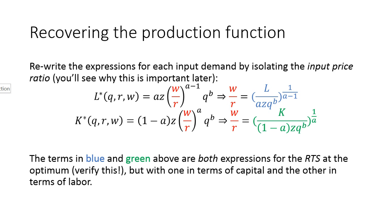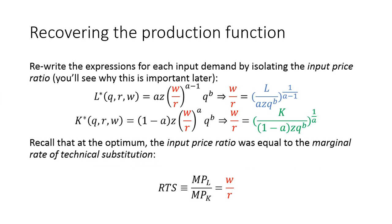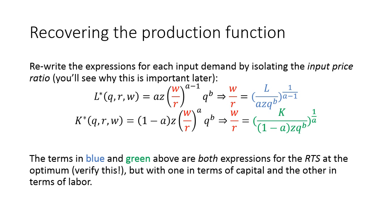Right on the slide, what we've already done is we've applied Shepard's Lemma to find the input demand bundles, and we've isolated the price ratio in each input demand bundle because we remember that the price ratio in equilibrium is equal to the rate of technical substitution. That means both of these expressions on the right here, the blue and the green, are both expressions for the rates of technical substitution, just one in terms of capital, one in terms of labor.